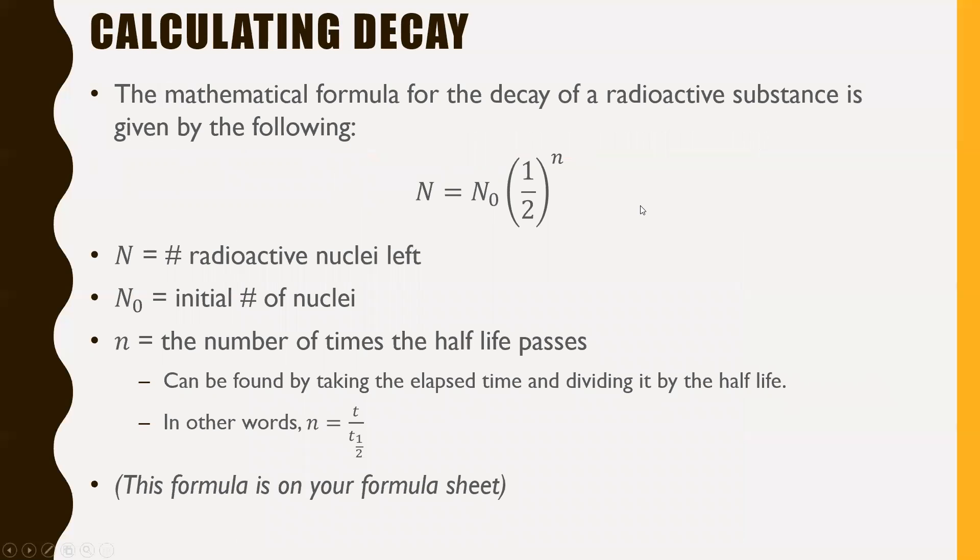The mathematical formula for the decay of a radioactive substance is given by the following equation: N equals N₀ times one-half to the power of lowercase n. Just to break down this formula, capital N is the number of radioactive nuclei left, so it's how much you actually have leftover. N₀ is your initial number of nuclei.